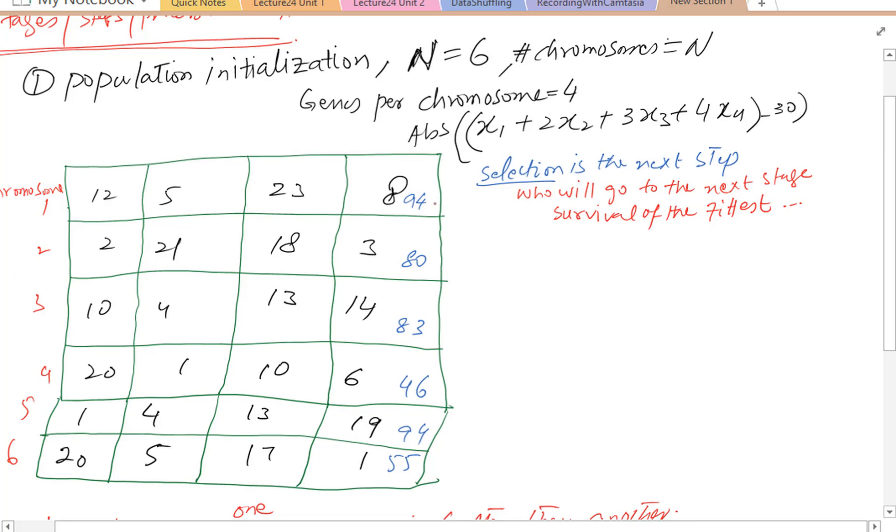Now, we need to convert these values to probabilities. As the probabilities should sum to 1, we need to convert the fitness values into probabilities first. Let's do that by dividing 1 divided by the fitness value.